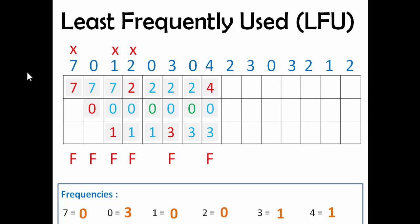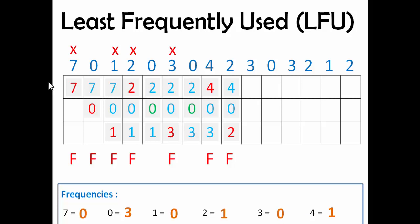The next page is 2. We check the frequencies of 4, 0, and 3 — 0's frequency is highest, and 4 and 3 have the same frequency. Checking left to right, 3 came first, so we remove 3 and add 2. 4 and 0 will remain there. There will be a page fault. We increase 2's frequency, reset 3's frequency, and put a cross over 3.